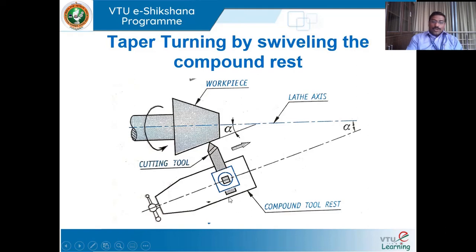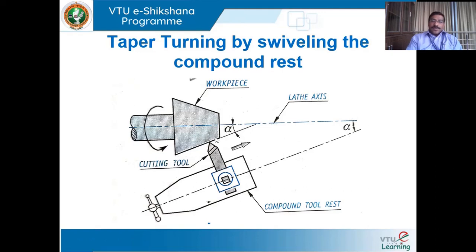Once the angle is obtained, the compound tool rest is swiveled to the desired angle and locked in that position. When the handle of the compound tool rest is rotated slowly and manually, we get a conical surface. The job is rotating in the chuck, and when the tool is moved not parallel to the job but inclined to it — at the calculated angle — we get a conical surface. In this operation, one can get very steep tapers for a very short length, which is the major advantage.